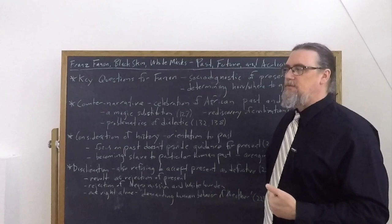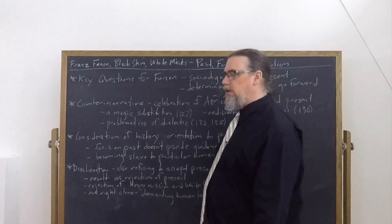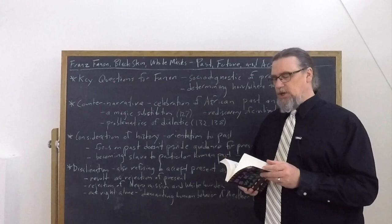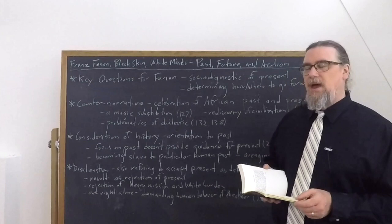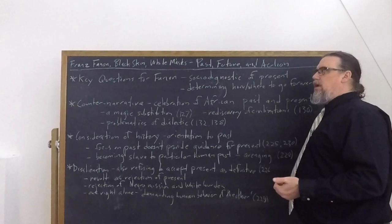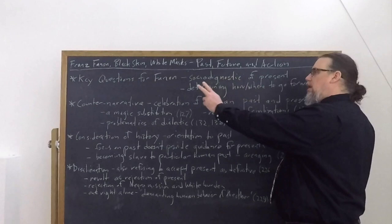And there's two sections in this work that I think are particularly relevant to this. One is, of course, his conclusion, which is titled By Way of Conclusion at the very end, chapter eight, but also chapter five, the fact of blackness, where he's tracing out a little bit of his own story. And so we should look first at chapter five, where this counter narrative is being developed and explored.